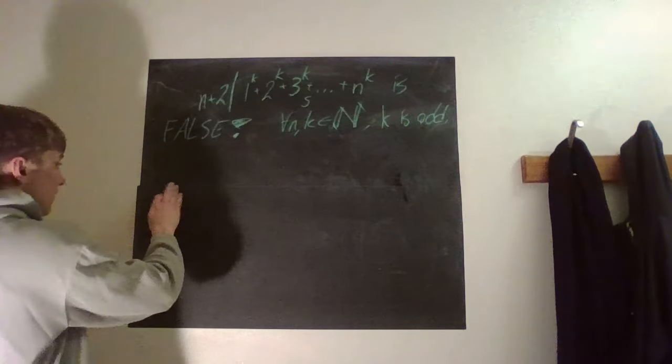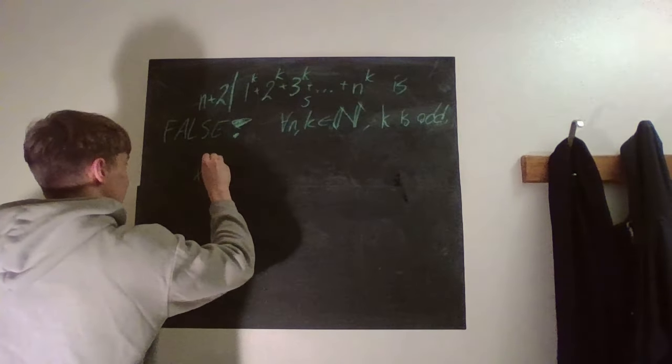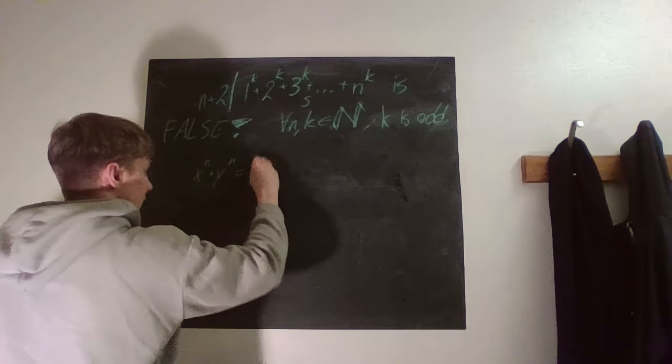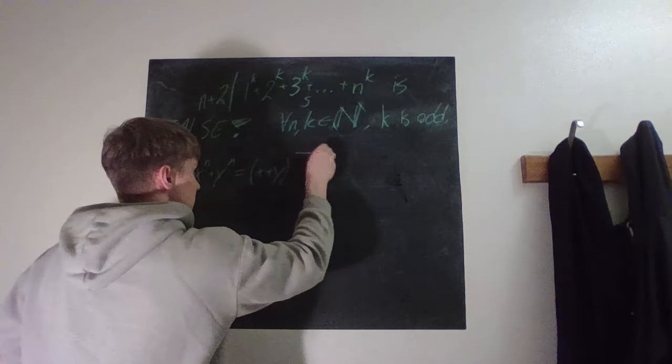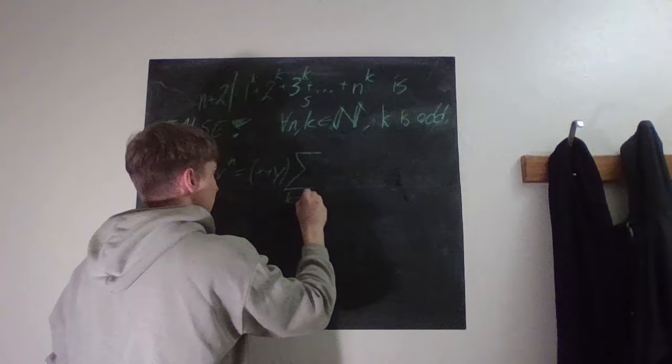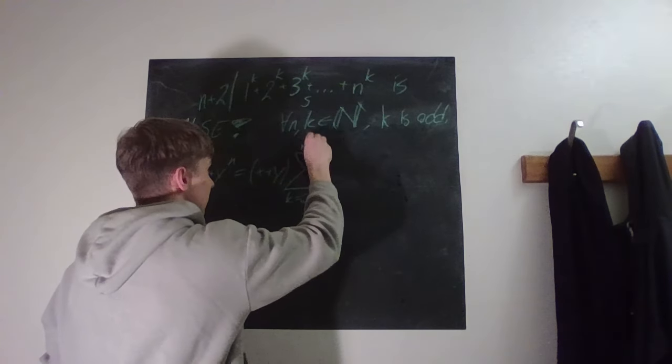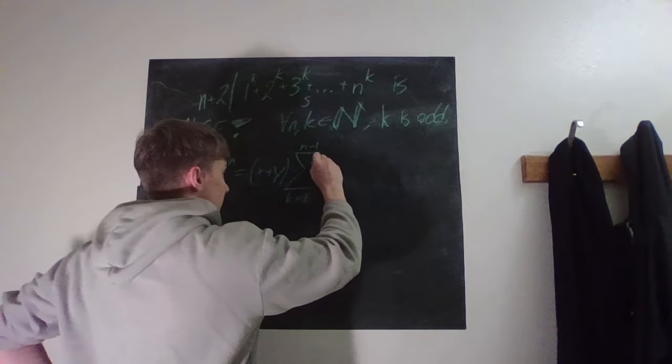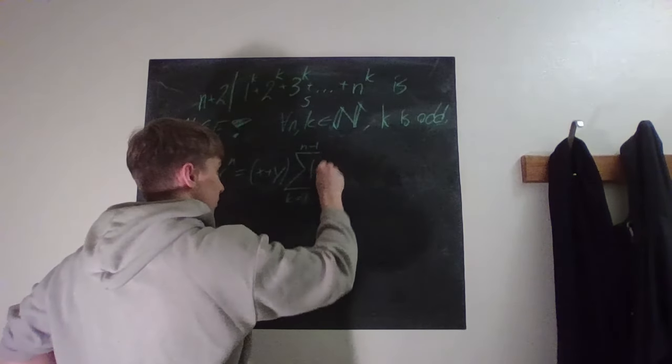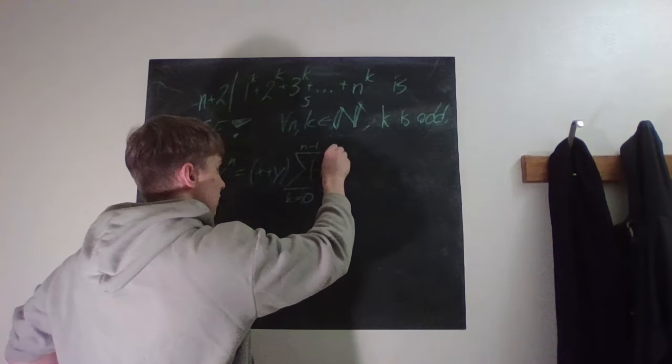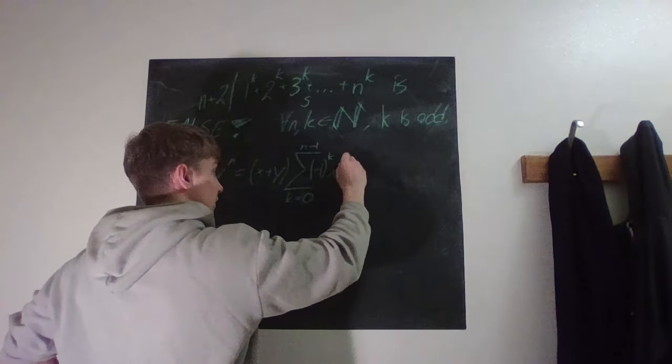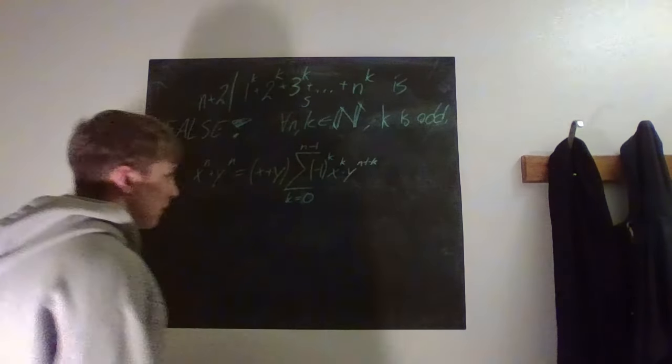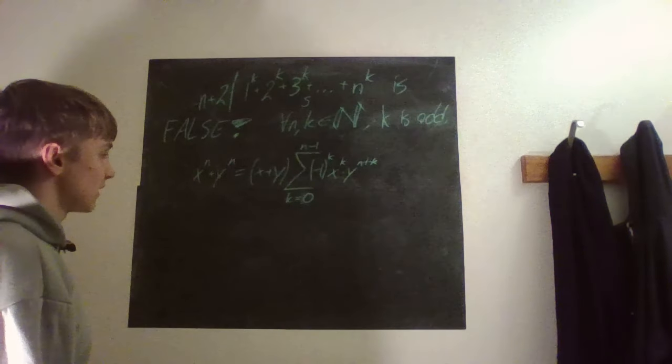So the formula that we want to use is the fact that x to the power of n plus y to the power of n can be written as x plus y times the sum where k ranges from 0 to n minus 1, times minus 1 to the power of k times x to the power of k times y to the power of n minus 1 minus k. Yes, exactly.